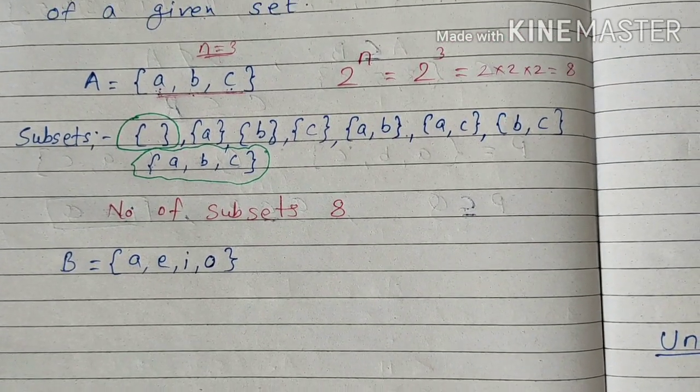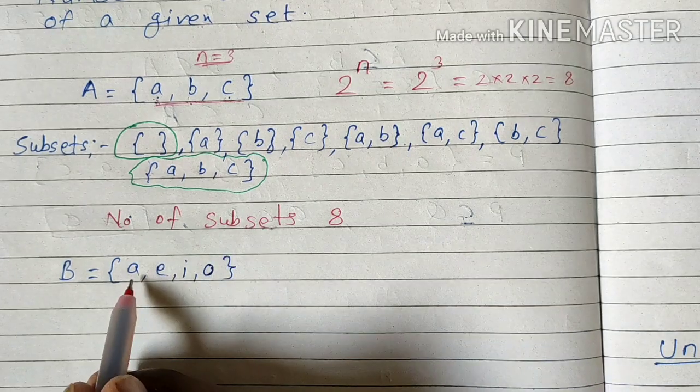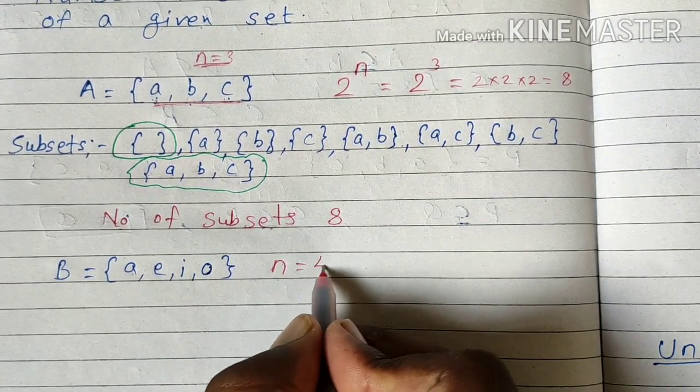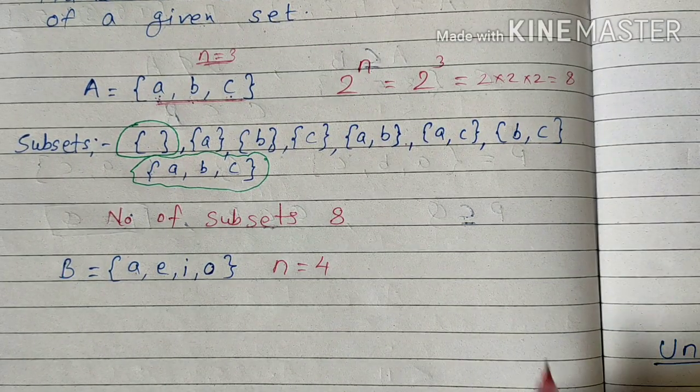Students, tell me how many elements are present in it. One, two, three, four. N is four, correct. And what will be the number of subsets for it?